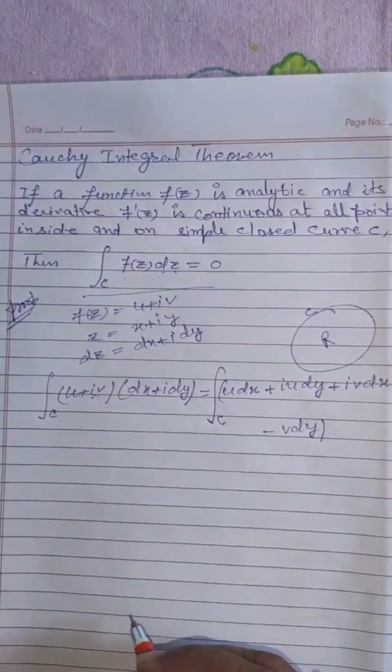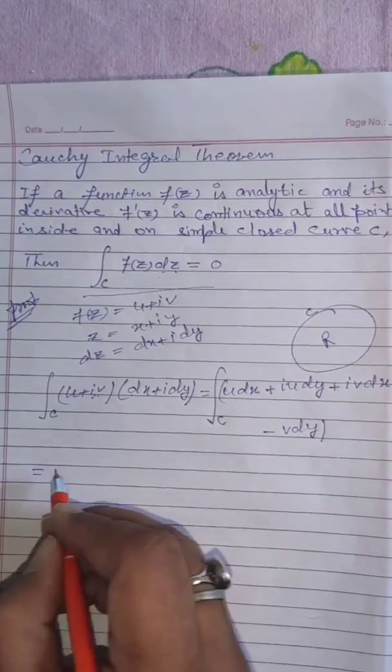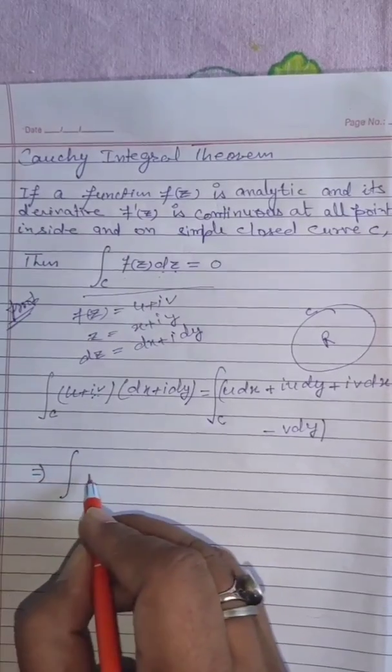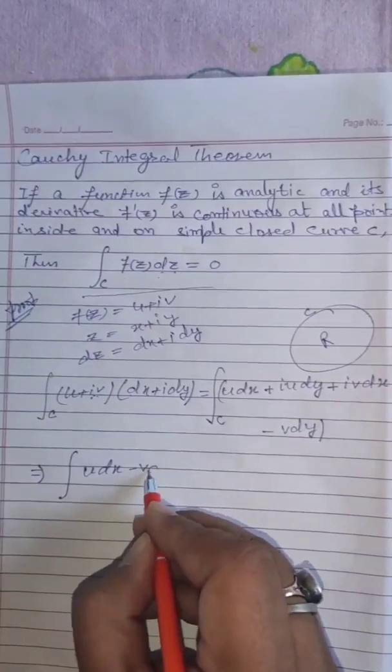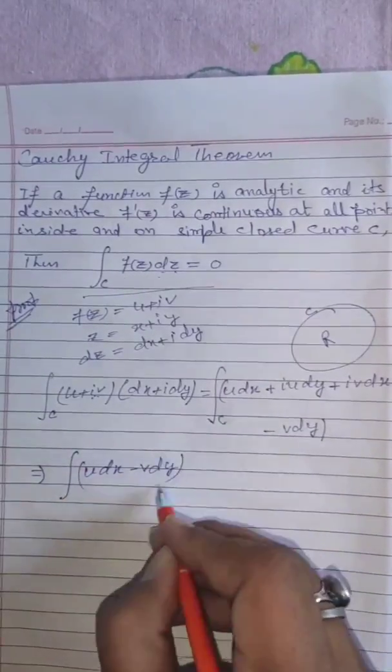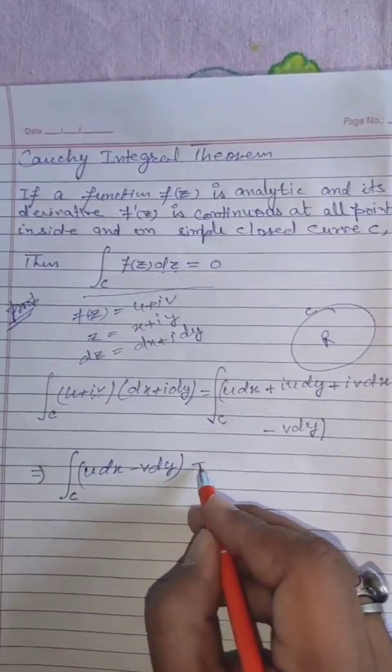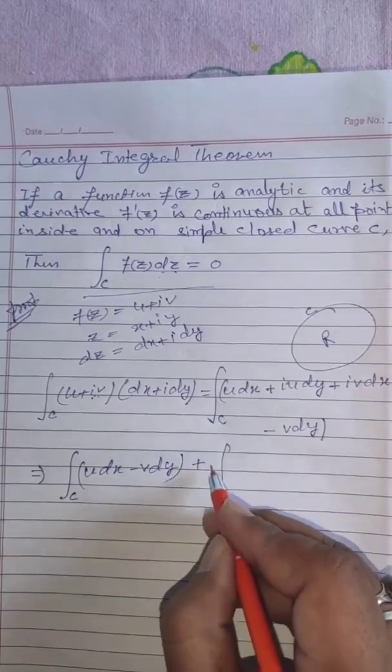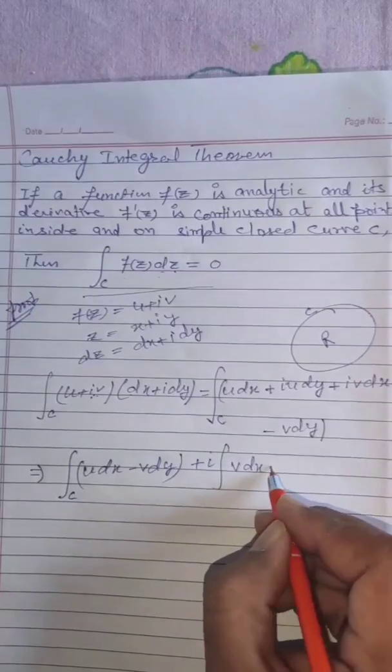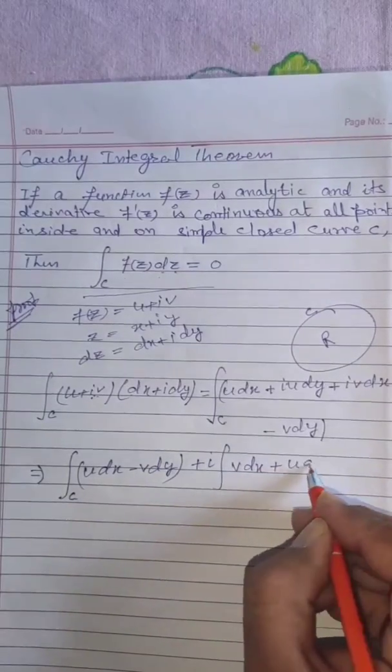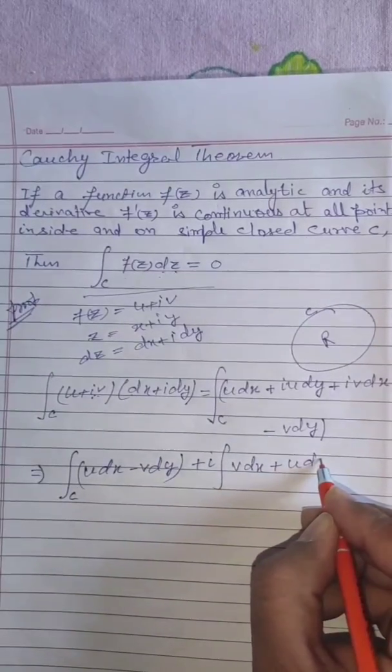Now we separate the real and imaginary parts. So it equals u dx minus v dy, which is the real part, plus i as a common factor: v dx plus u dy.